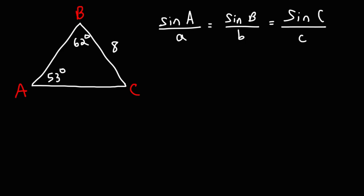The capital letters represent the angles, and the lowercase letters represent the sides. So across angle B is side B, across angle C is side C, and across angle A is side A, which means lowercase A is 8.